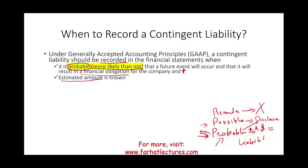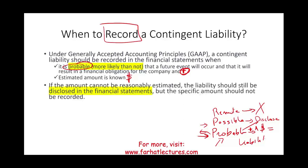This topic is testable on the CPA exam. When do you record the potential liability? When two conditions exist: the probability is high — probable, more likely than not — plus you can estimate the amount with reasonable certainty. When those two conditions exist, you have a contingent liability that you must record. If the amount cannot be reasonably estimated, the liability should be disclosed in the notes to the financial statements, but the specific dollar amount should not be recorded.